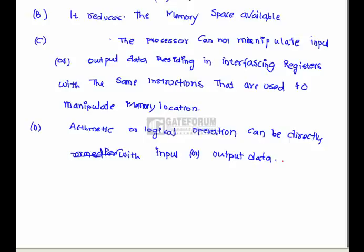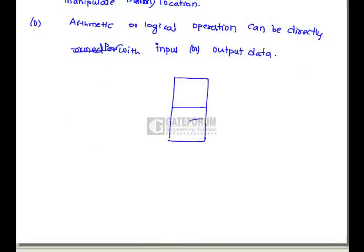The next question: in connection with memory-mapped input/output, which statement is NOT true? Consider statement A: the processor treats an interface register as part of the memory system. In memory-mapped I/O, a part of the memory is allocated to I/O addresses — there is no separate interfacing register; memory itself accesses I/O addresses. So statement A is correct.